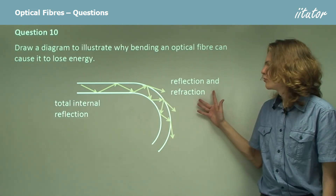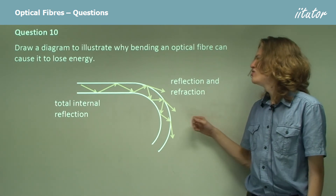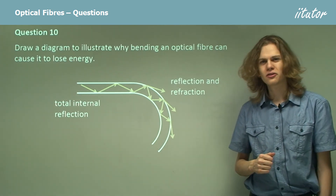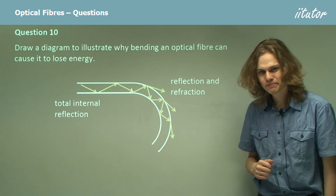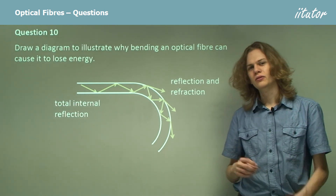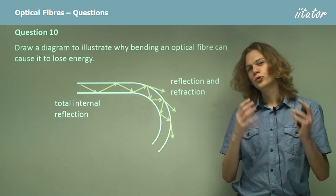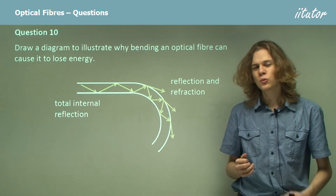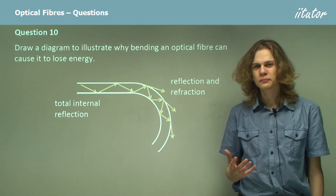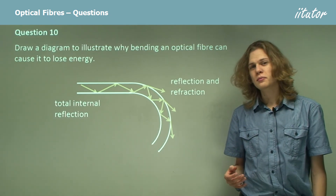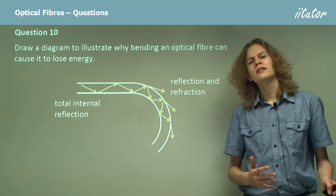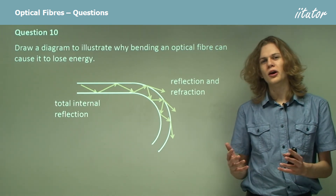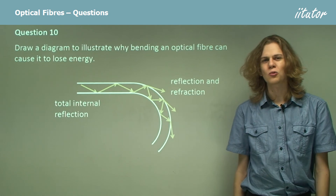This energy loss occurs because we're getting reflection and refraction instead of total internal reflection. That's the end of the questions. In this section, we've covered how total internal reflection is useful to us — we can use it in optical fibers. Optical fibers are used for endoscopes and transmission of data, both of which are quite useful in our world today.